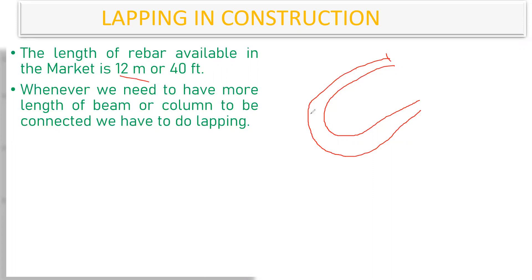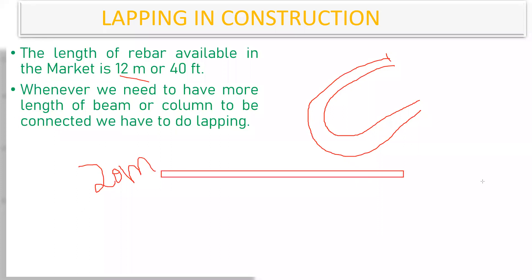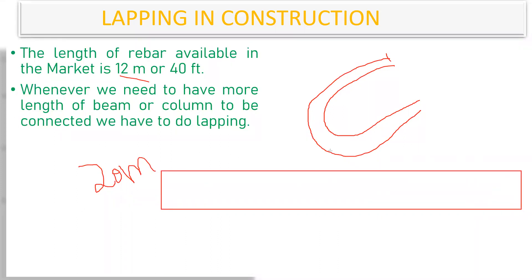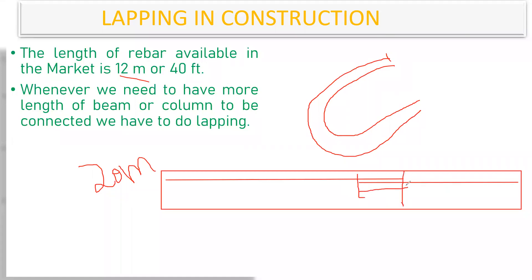Let's say I have a beam which is 20 meters long. One complete bar is not enough because one complete bar is 12 meters, but my beam is 20 meters — I'm falling short by another 8 meters. So I need to add another bar. The 12-meter bar goes up to a point and then I bring another bar for the remaining 8 meters. The overlapping region from here to here is called the lap length.